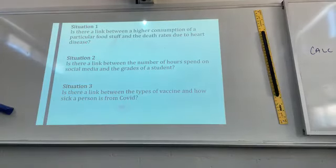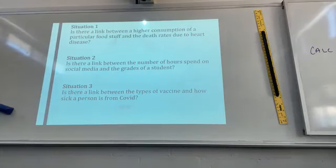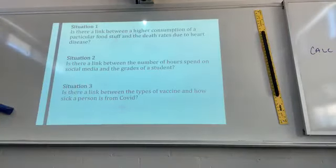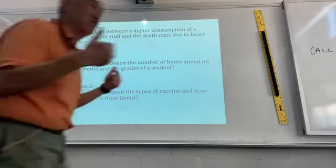In all these situations you can see there are two things involved: situation one — consumption of foodstuff and death rates; situation two — number of hours on social media and the grades of the student; situation three — type of vaccine and how sick a person is. We're comparing two things, therefore it's bivariate data. From a science perspective, one is the dependent variable and the other is the independent variable.